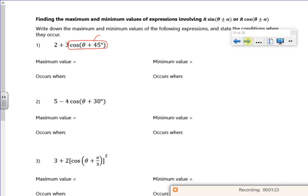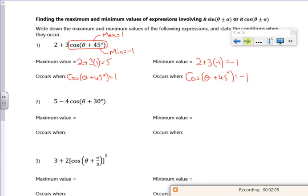So remember, max is equal to 1, min is equal to minus 1. So the maximum value is 2 plus 3 is 5. The minimum value, 2 plus 3 lots of minus 1. So I'm changing the box minus 1. It occurs when the red box is equal to 1, so that's cos of theta plus 45 is 1. It occurs when the box is equal to minus 1.